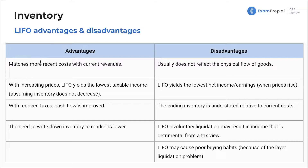With LIFO, with increasing prices, LIFO yields the lowest taxable income, assuming inventory does not decrease — so at constant levels. Lowest taxable income because it has the highest costs. With reduced taxes, cash flow is improved and the need to write down inventory to market is lower.